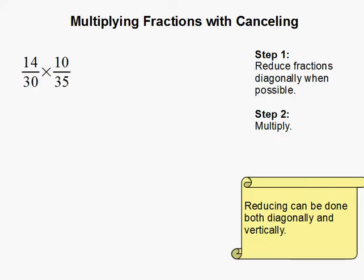Multiplying fractions with canceling. In this problem we have 14 over 30 times 10 over 35.